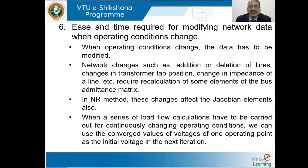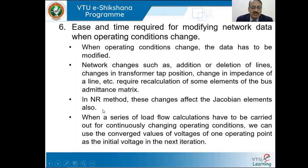Ease and time required for modifying network when operating conditions change: when operating conditions change, the data has to be modified. Network changes such as addition or deletion of lines, changes in transformer tap position, change in impedance of the line, etc., require recalculation of many elements of the bus admittance matrix. In the NR method, these changes affect the Jacobian elements also. When a series of load flow calculations have to be carried out for continuously changing operating conditions, we can use the converged value of the voltages of one operating point as the initial voltage for the next iteration.